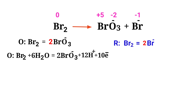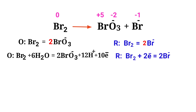Now you can equal the addition of charges in the reduction half reaction. Both sides are not equal. To make them equal, you should add 2 electrons to the left side to make it equal to minus 2. Now the addition of charges are equaled in the reduction half reaction.